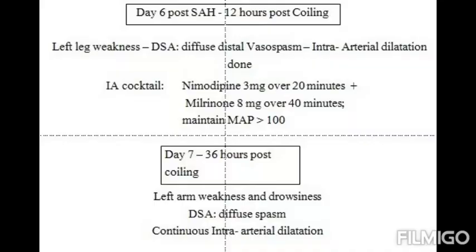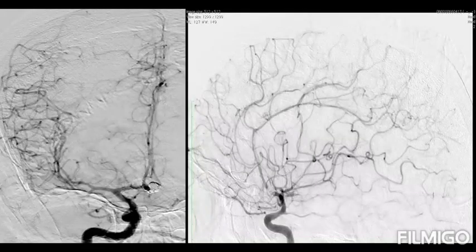Twelve hours after coiling, which is day 6 post subarachnoid hemorrhage, she developed left leg weakness. Angiography showed diffuse vasospasm and intra-arterial dilatation with the above cocktail was performed. Thirty-six hours post coiling, she developed left arm weakness and became drowsy. DSA again showed diffuse vasospasm in both the anterior cerebral artery and middle cerebral artery territories.